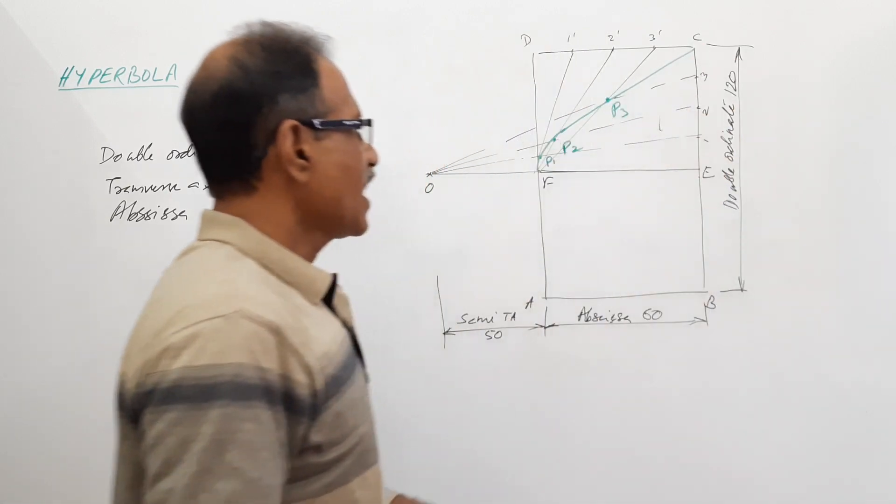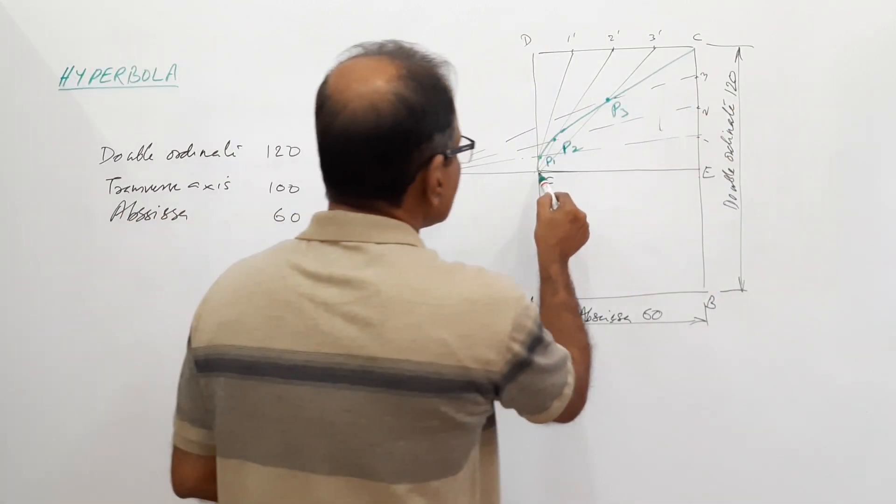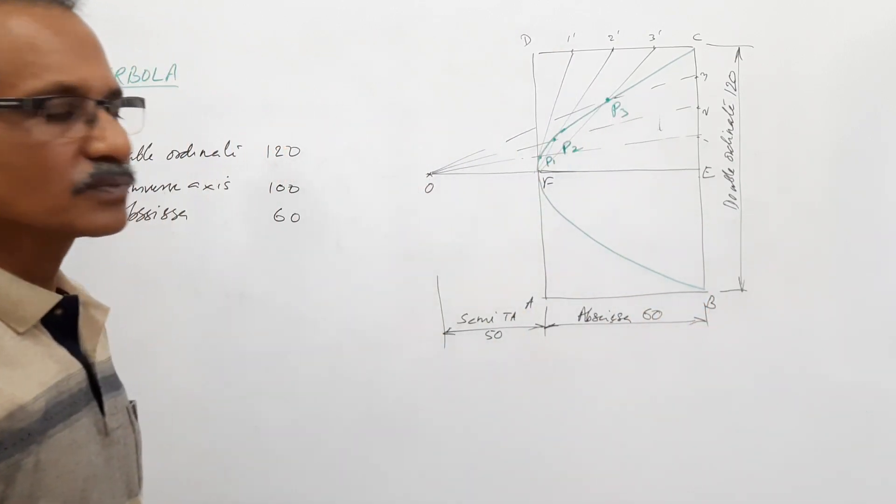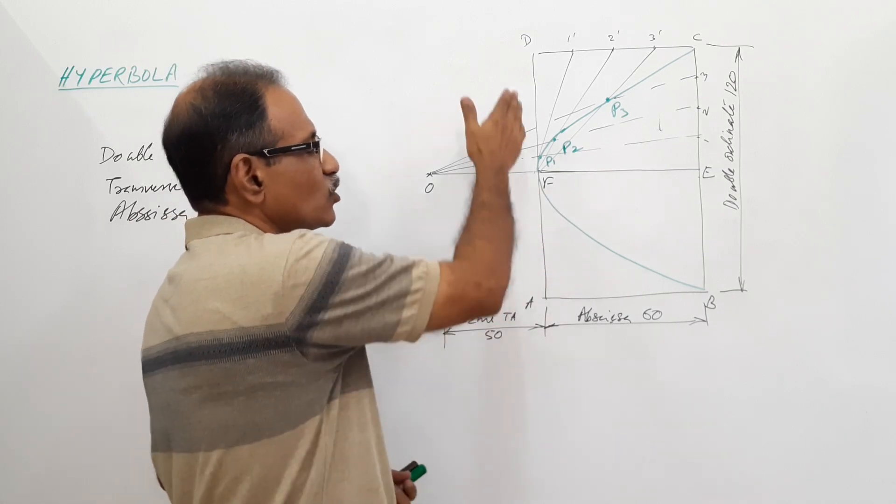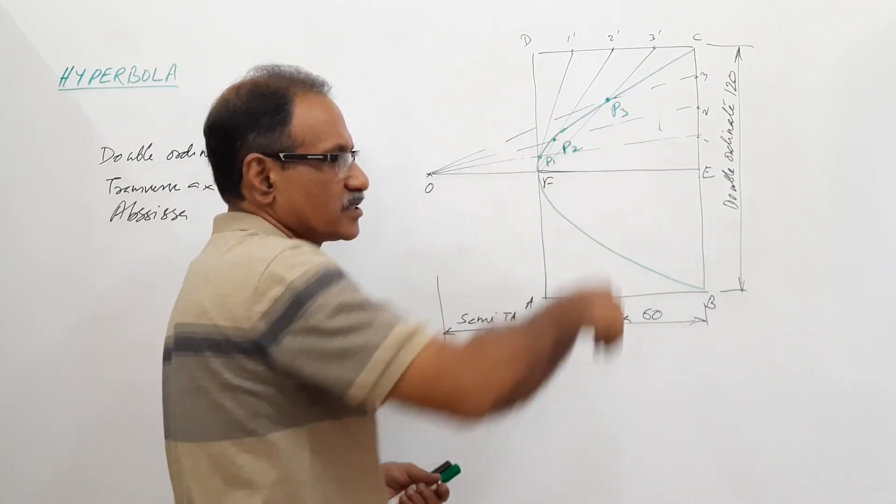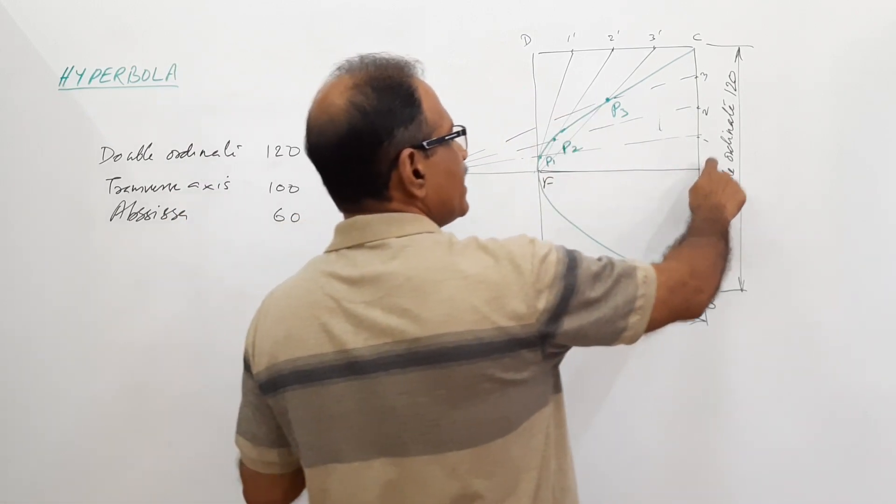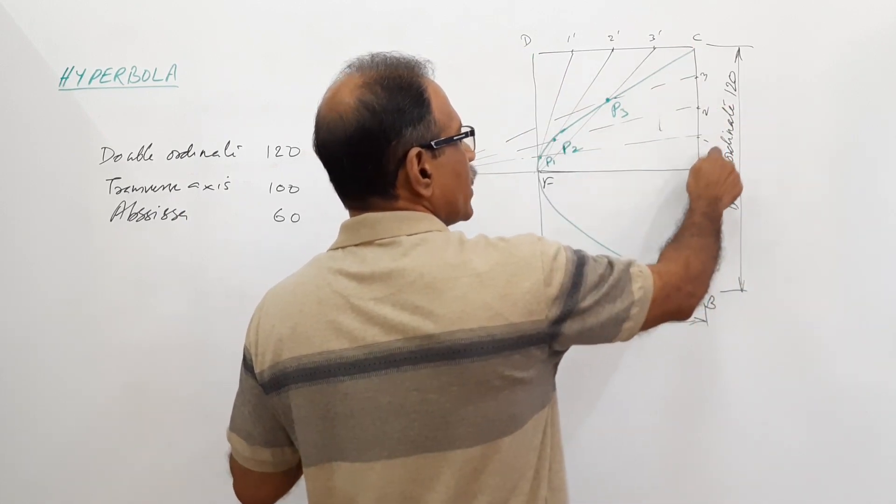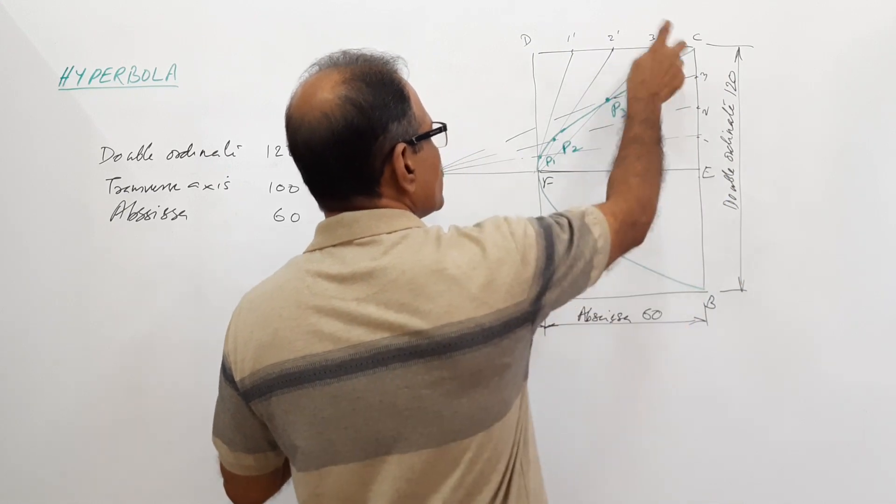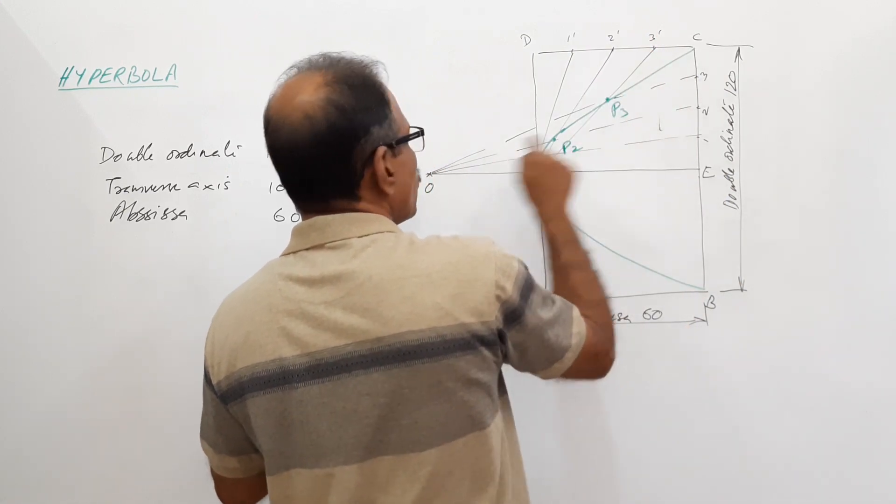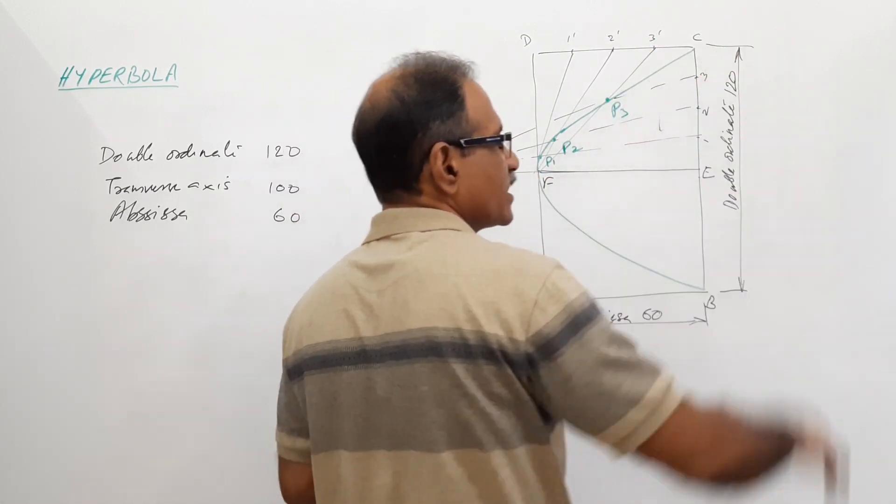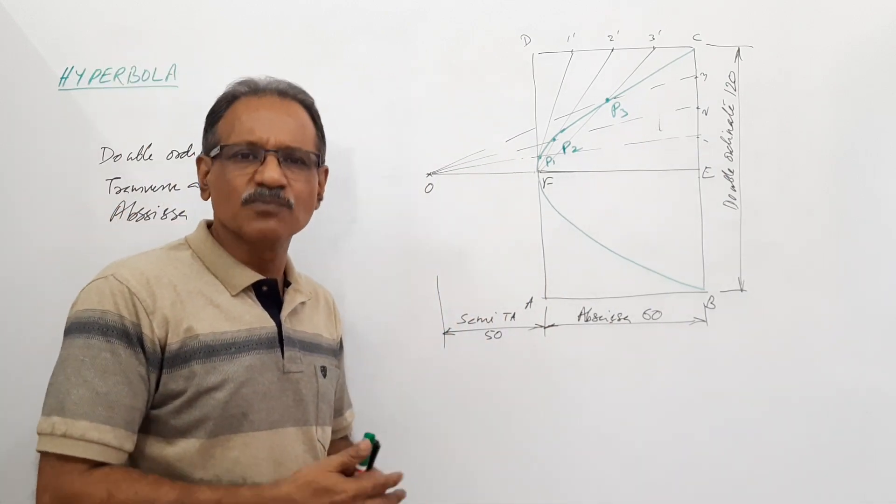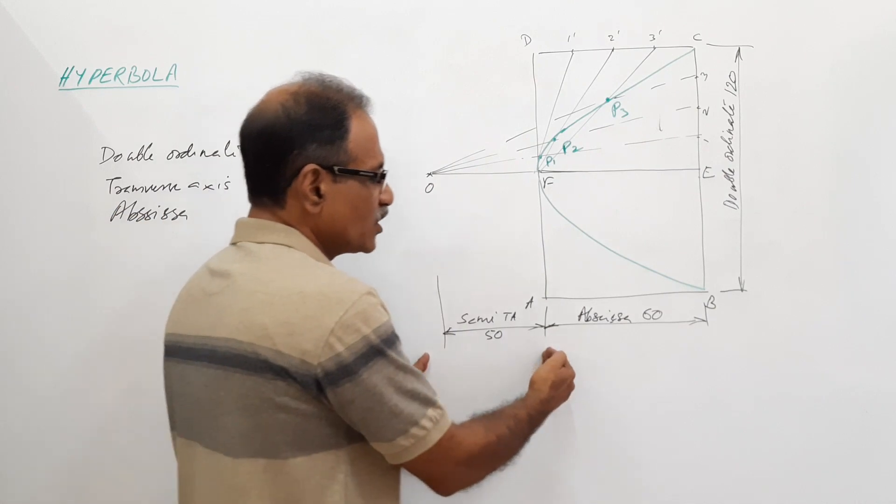Connecting this, you get half of the hyperbola. Same thing you can do on this side. You can make similar construction or transfer points. I repeat: divide CE and CD into four equal parts. 1, 2, 3 are connected to F. 1, 2, 3 are connected to O. They intersect at the restricting points. Very simple procedure. Semi-transverse axis and abscissa.